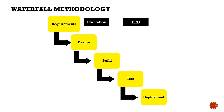Once the BRD is signed off, the next major deliverable is the FRD — Functional Requirement Document. Where the BRD captures 'what,' the FRD captures 'how' — how the system should work. For example, the requirement to add or delete items from the cart (say BR4) might be mapped to FR4a for adding and FR4b for removing.